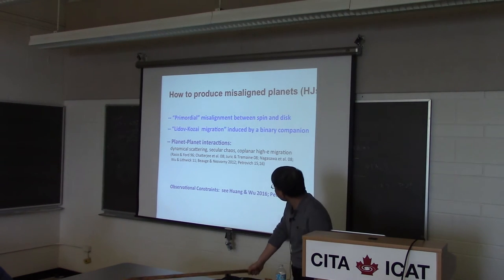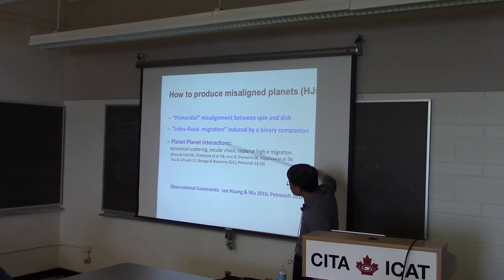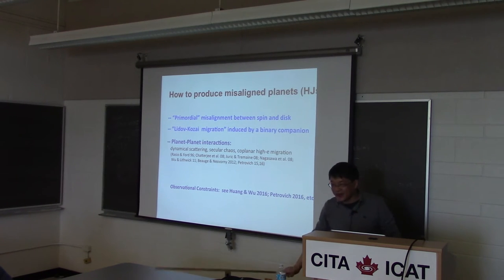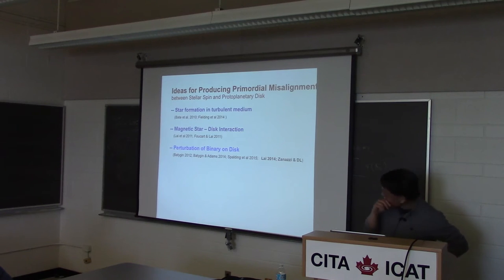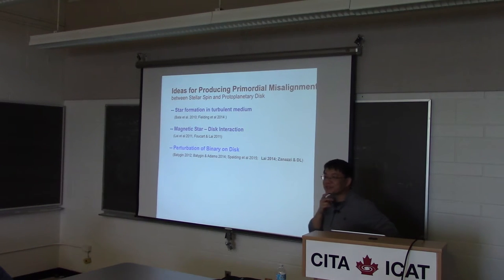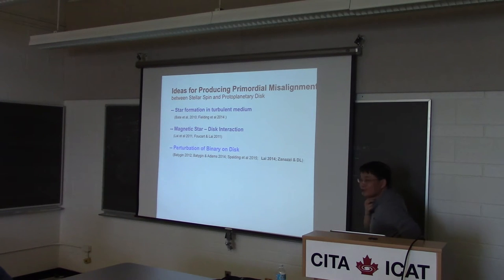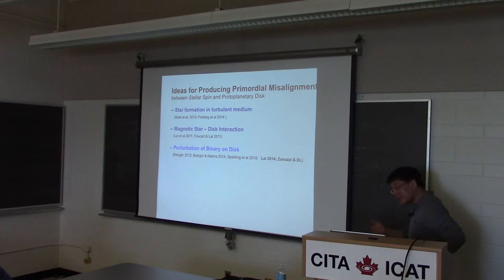What I'm going to talk about in the first 40 minutes of the talk is to discuss both of the first two mechanisms. So how do you produce primordial misalignment between the disk and the protostar? There are several general ideas that have been put forward.